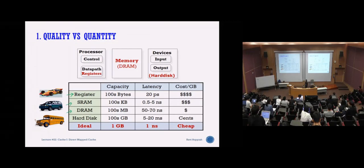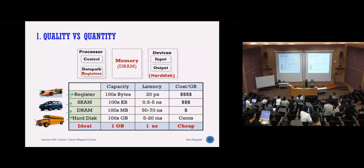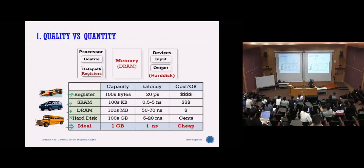SRAM is very fast but expensive in terms of space. DRAM is slow but very cheap in terms of the space it uses. Your hard disk can hold a lot of capacity but is very slow, and the cost is much lower. The ideal situation is a lot of memory with very low access time and very low price. Maybe in a few years we may get to that point and this topic can be removed from the curriculum.